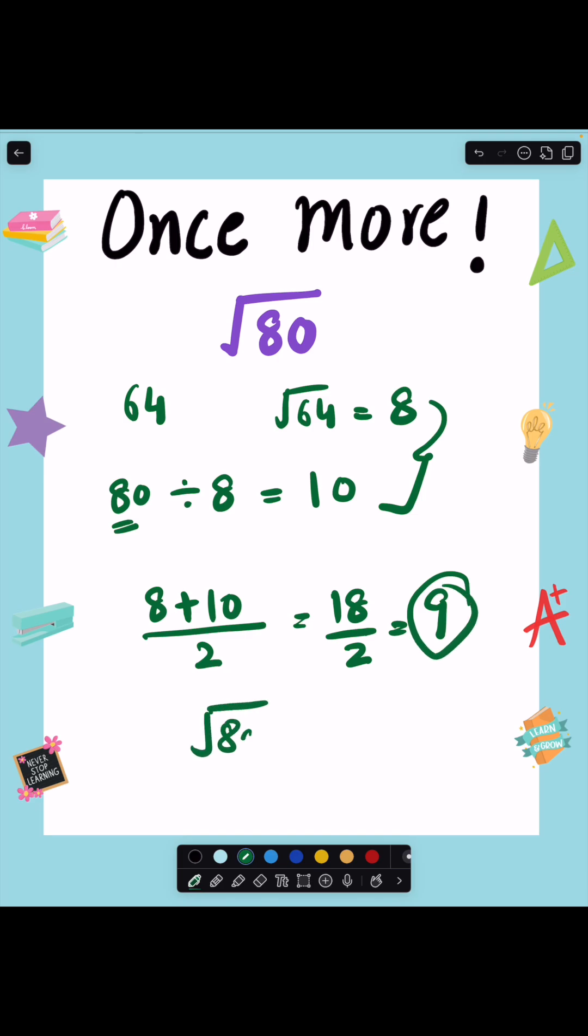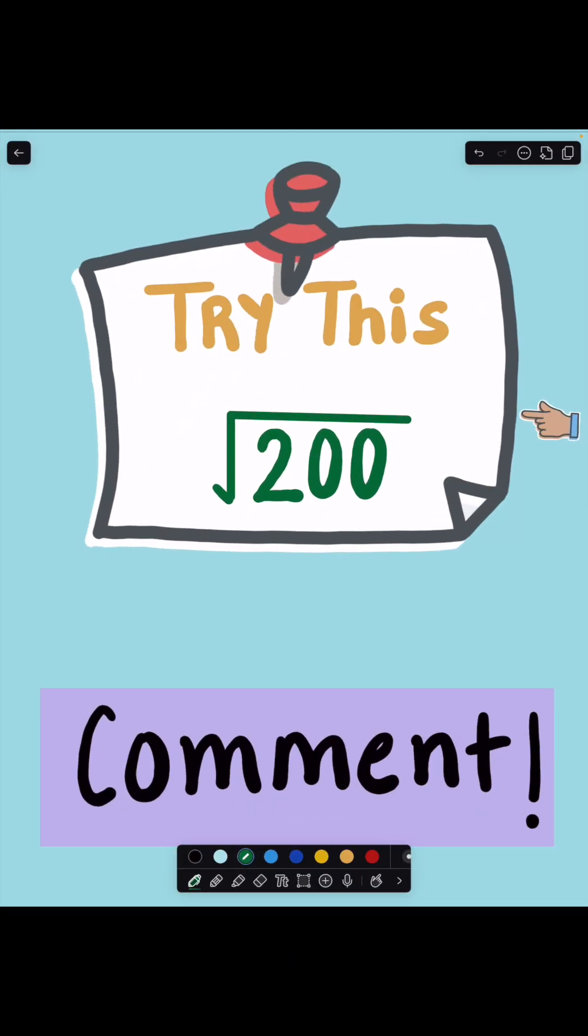So 8 plus 10 divided by 2 equals 18 upon 2, which gives us 9. That's our answer: square root of 80 is equal to 9.